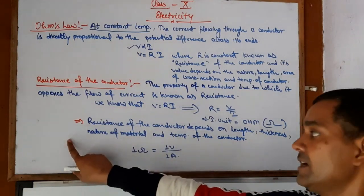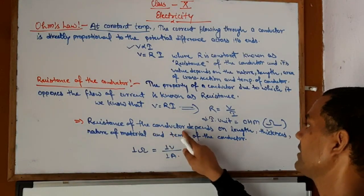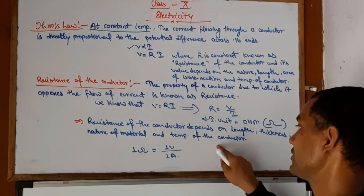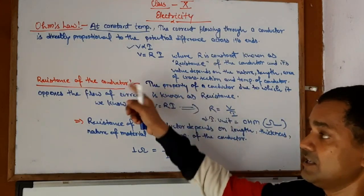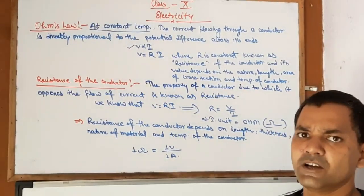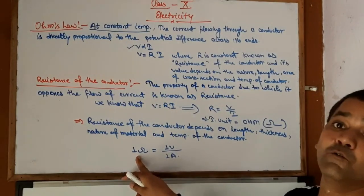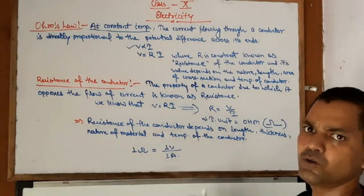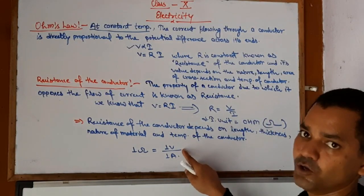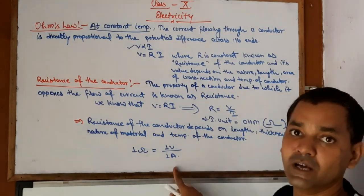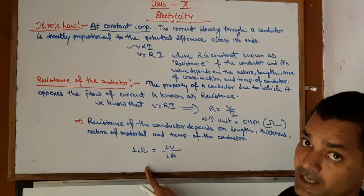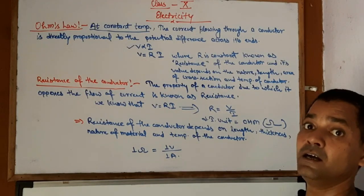The resistance of the conductor depends on the length, thickness, nature of material, and temperature of the conductor. Sometimes you may be asked: what is 1 ohm? When the potential difference is 1 volt and the current flowing through it is 1 ampere, that is equivalent to 1 ohm. It is clear.